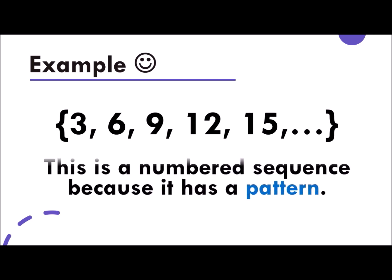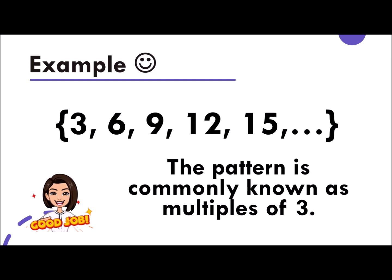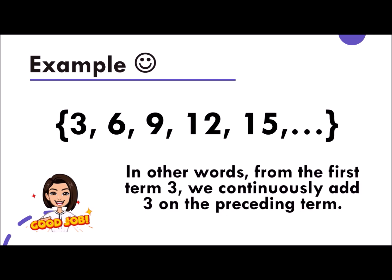Let's have our first example. 3, 6, 9, 12, and 15. This is a numbered sequence because it has a pattern. Can you identify what pattern does it show? Kindly think of it. Good job! The pattern is commonly known as multiples of 3. In other words, from the first term 3, we continuously add 3 on the preceding term. Or during our elementary days, 3 times 1 is 3, 3 times 2 is 6, 3 times 3 is 9, and so on.